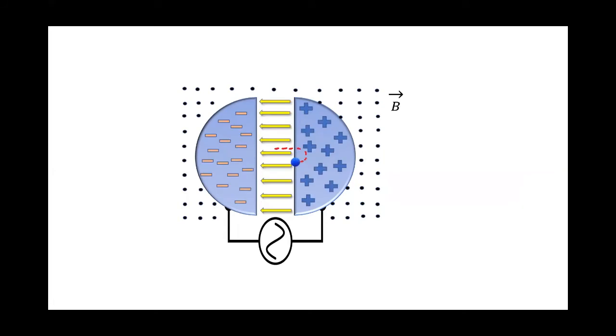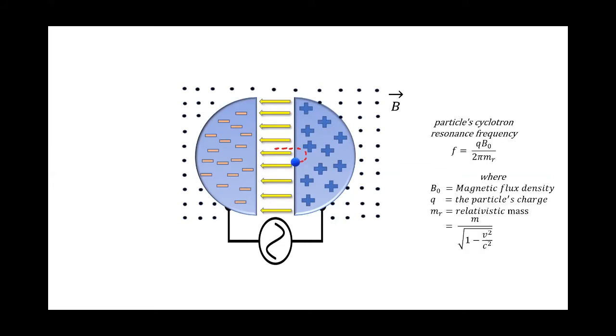Before reaching the inner edge of the plate, the polarity of the voltage source should change. To ensure such synchronization, the frequency of the AC voltage source should be equal to the particle's cyclotron resonance frequency.